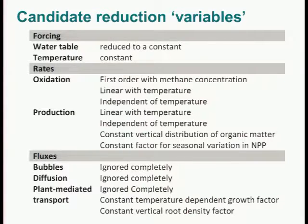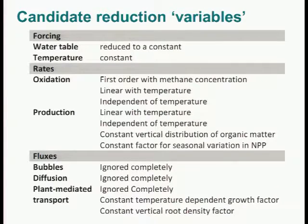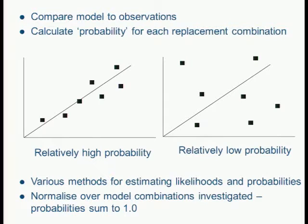These are the variables we decide to test — how important are they in this model? Things like the water table, which varies for each site — if we could make that a fixed value, it would make global predictions much easier, since predicting water table height is quite difficult. Similarly for temperature. For the transport fluxes, let's suppose there are no bubbles, or let's ignore diffusion — which would make the model much easier to implement. And we can test whether there's a temperature effect on the rate of methane oxidation. We then go through this process iteratively, replacing all those things with a constant and each time making a comparison to the data.